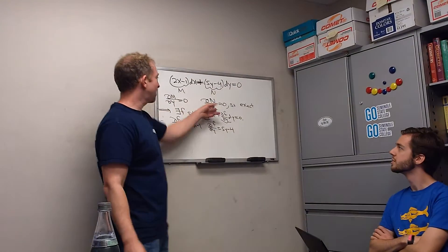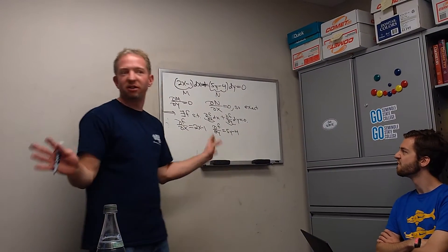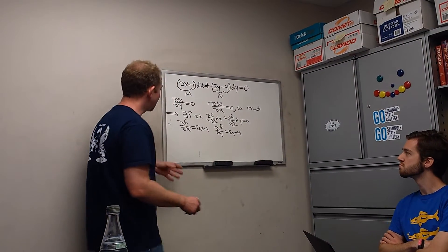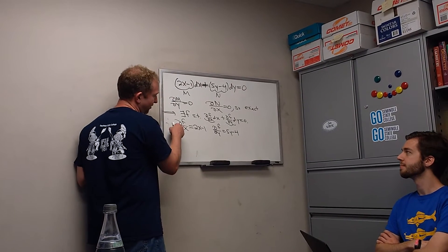Alright, so you check. If these are the same, it's exact. If it's not exact, you're done. Okay. Alright, so now here's the idea. You pick one and integrate it, and then you differentiate it. So let's integrate this one. Okay. So we're going to integrate this one with respect to x,